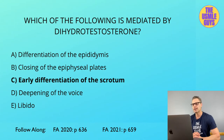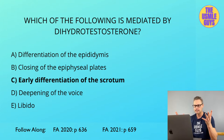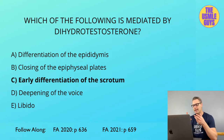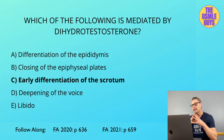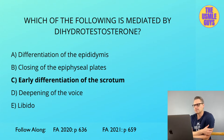The correct answer here is C. Let's talk about androgens, which includes testosterone, DHT, and androstenedione. Testosterone comes from the testes. Androstenedione comes from the adrenals. DHT is produced when testosterone is converted via 5-alpha reductase. You should know this enzyme.